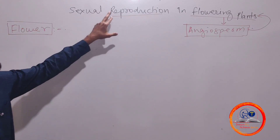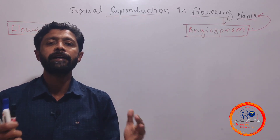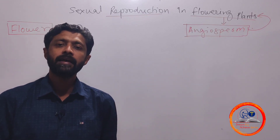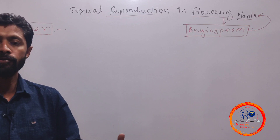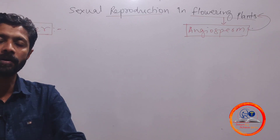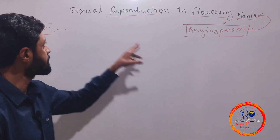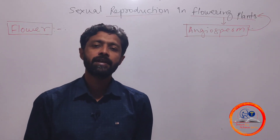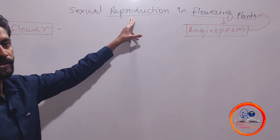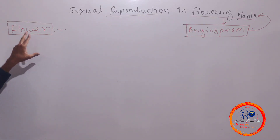Reproduction is the ability of an organism to produce its own kind of organism. Sexual reproduction means the reproduction in which there is formation and fusion of gametes. The part involved in sexual reproduction in angiosperms is what we call a flower.